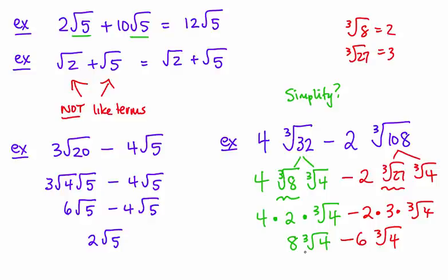And so now I have like radicals. So 8 of that radical, cube root 4 minus 6 of that same, 8 minus 6 is 2, and the radical is the cube root of 4.